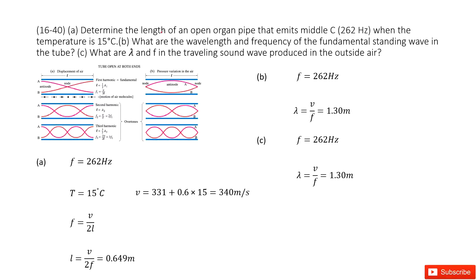The first one, we need to determine the length of the open organ pipe that emits middle C, 262 Hz, when the temperature is 15 degrees Celsius. Now we look at the open organ pipe. This is a tube open at both ends.